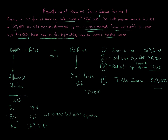To summarize: Step one — start with book income. Step two — add back the bad debt expense under GAAP because that is not what we use for tax purposes. Step three — subtract the bad debt expense under the direct write-off method, which we do use for tax purposes. Step four — taxable income equals $572,000. That is the correct answer.